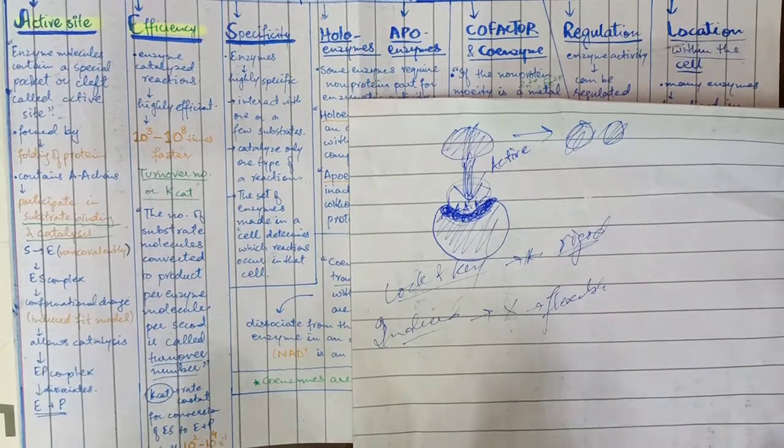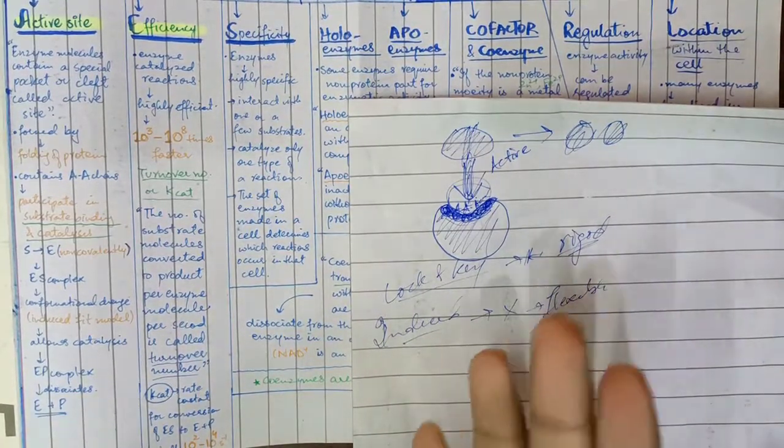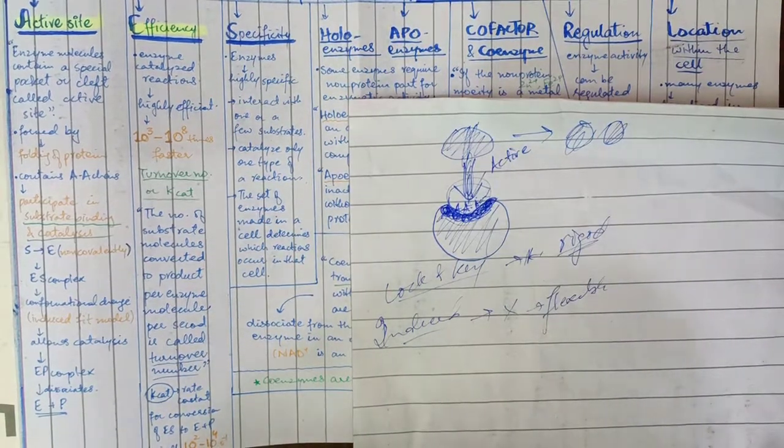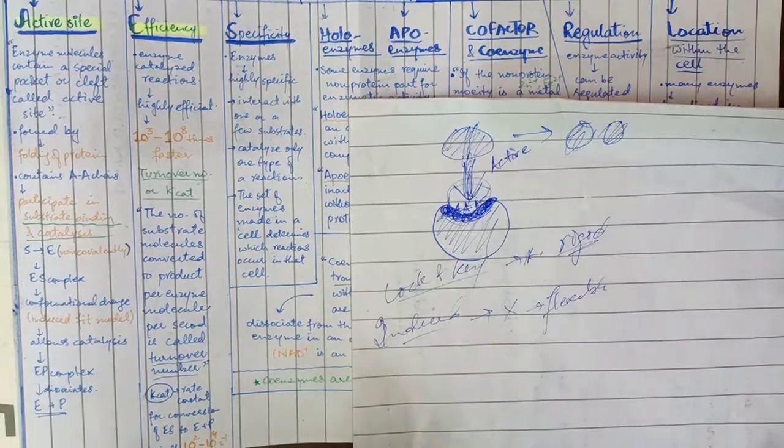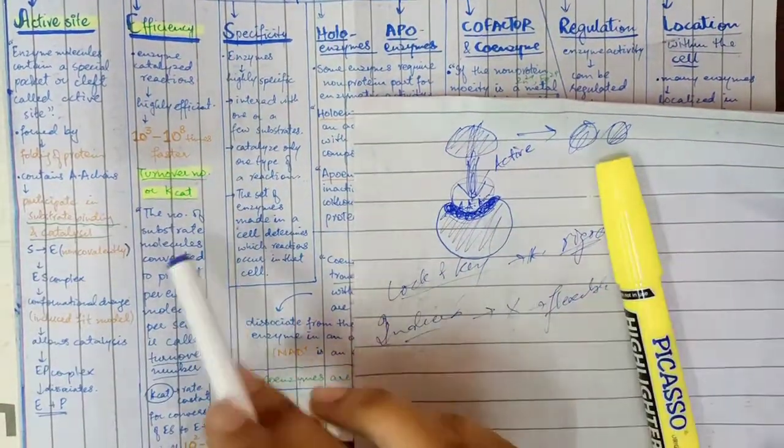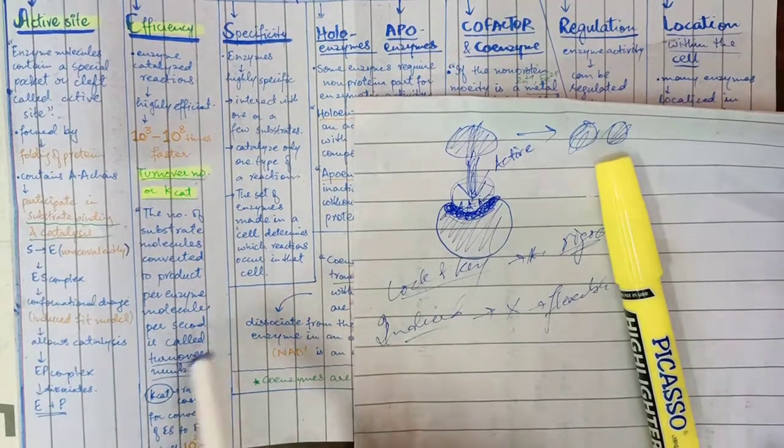Enzymes are very fast, with catalysis rates from 1,000 to 10 billion per second. The speed is very strong and highly efficient. Turnover number, also called K-catalysis, is a key term. The number of substrate molecules converted to product by one enzyme molecule per second is called the turnover number.